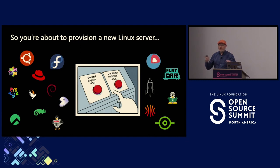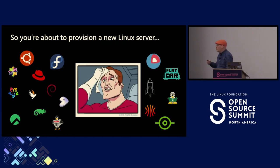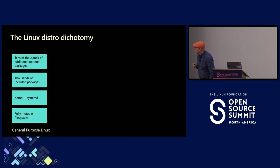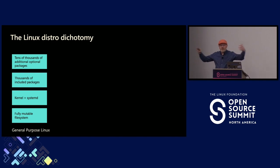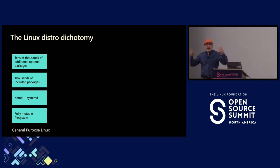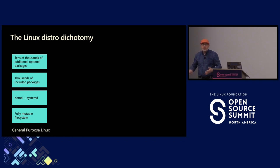Let's think about some of the trade-offs, particularly between general purpose versus special purpose. What does a general purpose Linux look like? Basically, it's a stack starting from a mutable file system, which has the kernel, some kind of init system — typically systemd today — and running on top of that, a whole set of packages, with your workloads running on that. There may be thousands of packages installed by default, probably tens of thousands in the broader universe of packages that the distro maintains and makes available.